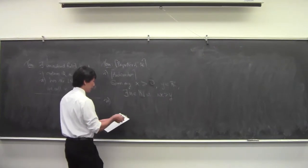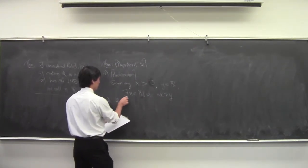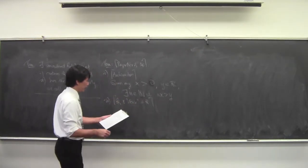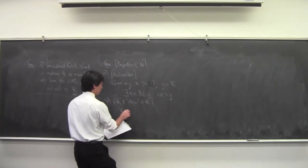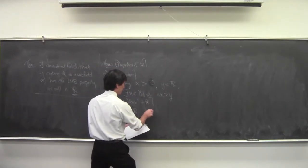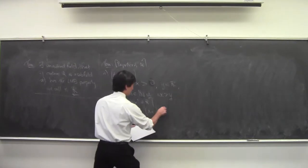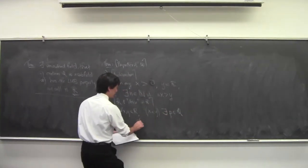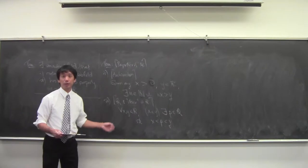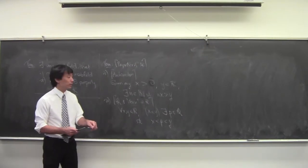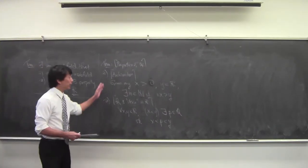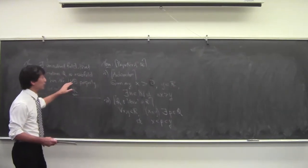The Archimedean principle gives us something called the density of Q. So Q is dense in R. What we mean by that is: for all x and y in R, where x is less than y, there exists a p in the rationals that lies between them. Between any two real numbers, you can always find a rational number. We're going to prove both using basically the least upper bound property.